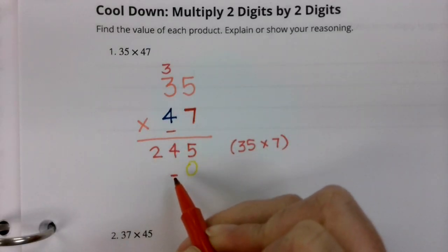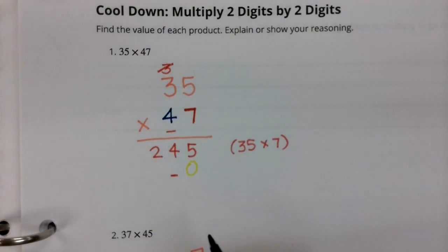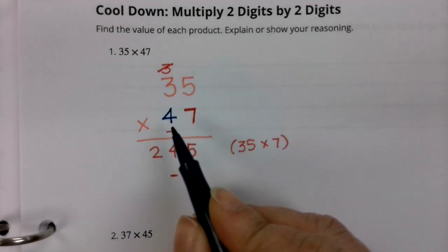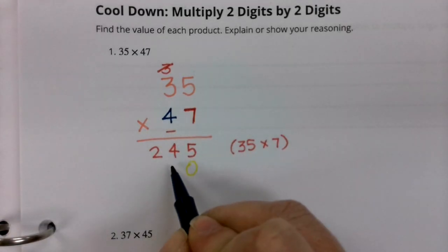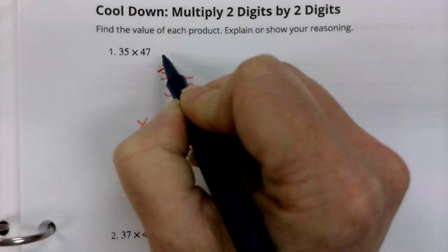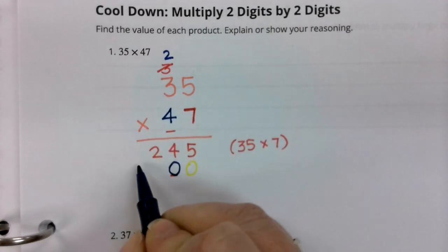So my answer begins in the tens place. I'm going to cross off this carry three so I don't accidentally add it again, which is a common mistake that sometimes we will make. Let's get started with the four. Four times five is 20. So here's my zero. Carry the two. Four times three is 12 plus two more is 14.